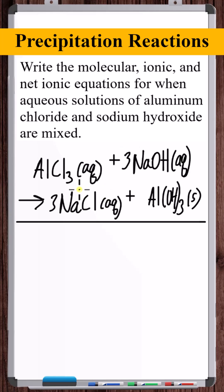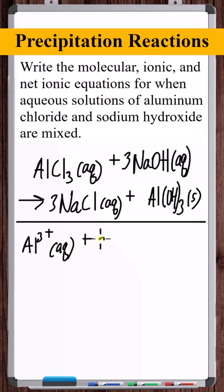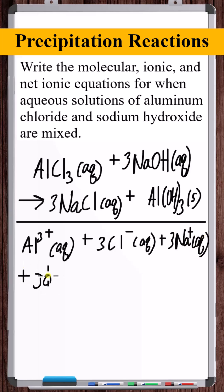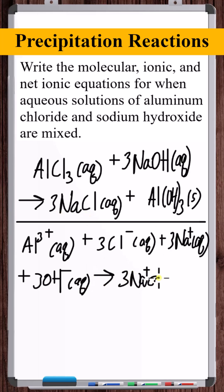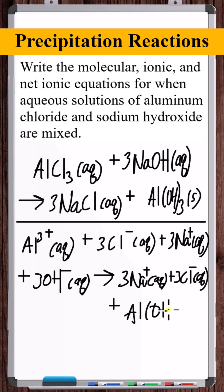For the ionic equation, we break up all strong electrolytes into ions. In these precipitation reactions, all aqueous ionic compounds are strong electrolytes. So we write: Al³⁺(aq) + 3Cl⁻(aq) + 3Na⁺(aq) + 3OH⁻(aq) → Al(OH)₃(s) + 3Na⁺(aq) + 3Cl⁻(aq). We do not break up the precipitate. That's the ionic equation.